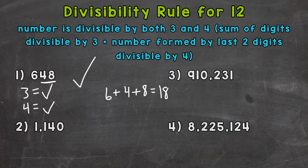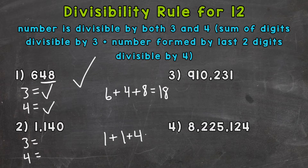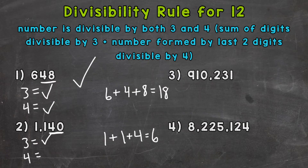On to number 2, where we have 1140. We'll do 3 and 4 again. Let's find the sum of our digits: 1 plus 1 plus 4 plus 0. 1 plus 1 is 2, plus 4 is 6. 6 is divisible by 3, therefore 1140 is divisible by 3 as well. Let's check the last two digits: we get 40. 40 is divisible by 4 — 40 divided by 4 equals 10 — so 1140 is divisible by both 3 and 4, therefore divisible by 12.